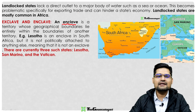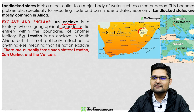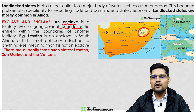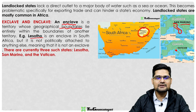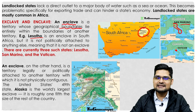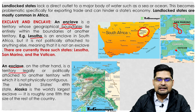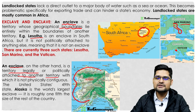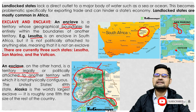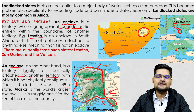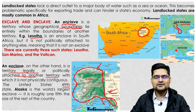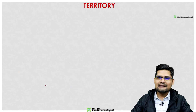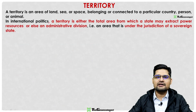An enclave is a territory whose geographical boundaries lie entirely within another territory — Lesotho, San Marino, and Vatican City within Italy are examples. An exclave, on the other hand, is a territory legally or politically attached to another territory but not physically in contact with it — Alaska is part of the United States but is bounded by Canada, making it an exclave.